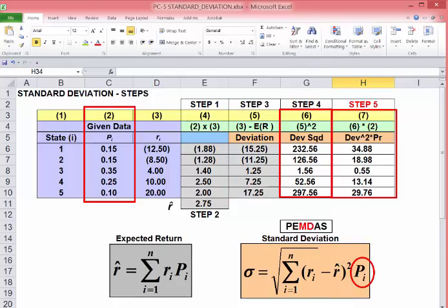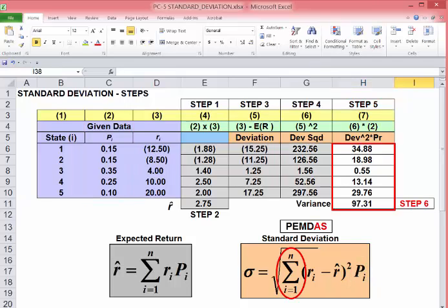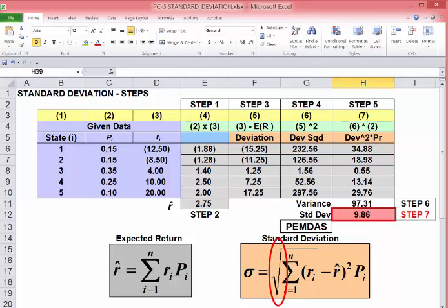In step 5, we multiply the square deviation by the probability. Step 6, the summation sign. We add up that column. That result is the variance. We want the standard deviation, so in the 7th step, we take the square root of the variance, and we get 9.86 as our standard deviation.